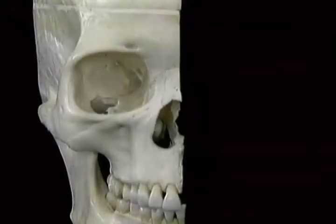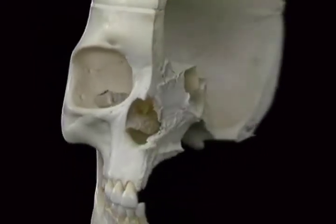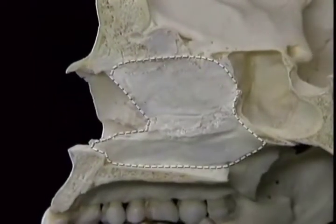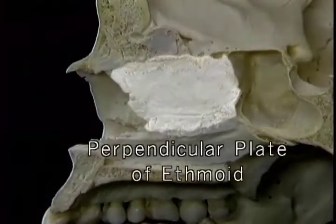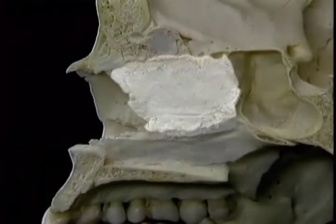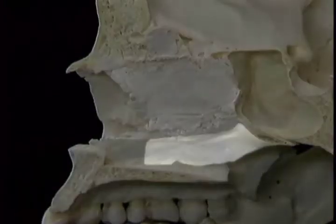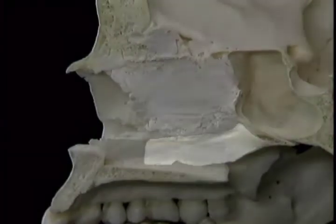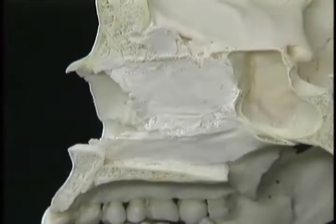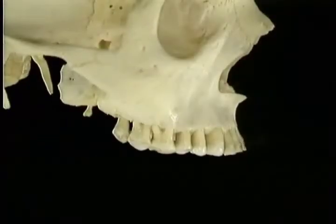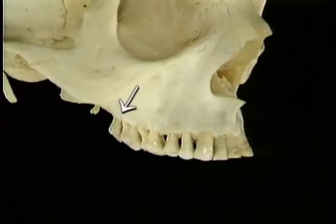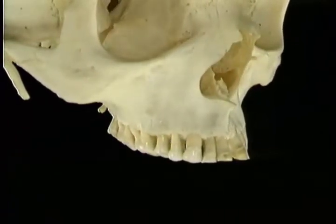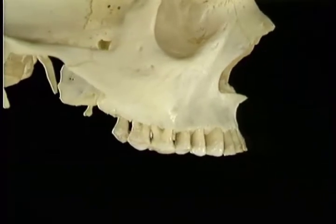To see more of the septum and the nasal cavity, we'll look at a skull that's been divided just to the left of the midline. Here's the bony part of the nasal septum. It's formed by this part of the ethmoid bone, the perpendicular plate, and by the vomer. The lowest part of the septum is formed by the maxilla and by the palatine bone. The part of the maxilla that bears the teeth is called the alveolar process, and the alveolar process ends behind at the tuber.